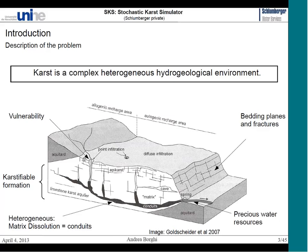The model includes punctual infiltration inlet points, which make karst aquifers more vulnerable, and point outlets. The methodology takes into account geological constraints — for example, different aquifer zones where conduits cannot be placed — and also the fracturing and all initial discontinuities, which are included to add realism and to guide the generation of karst conduits.